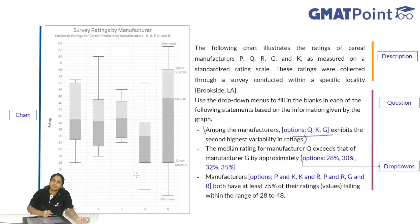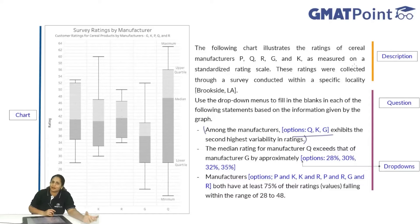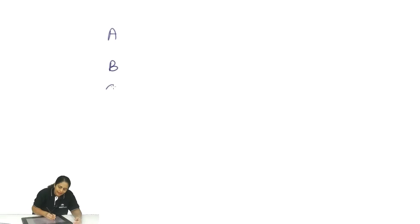Let us understand the description. The following chart illustrates the ratings of cereal manufacturers P, Q, R, G and Q as measured on a standardized rating scale. These ratings were collected through a survey conducted within a specific locality, Brookside Lake. To understand what a box and whiskers plot is, let us use an example — instead of looking at these five manufacturers, I will consider three movies: A, B and C.